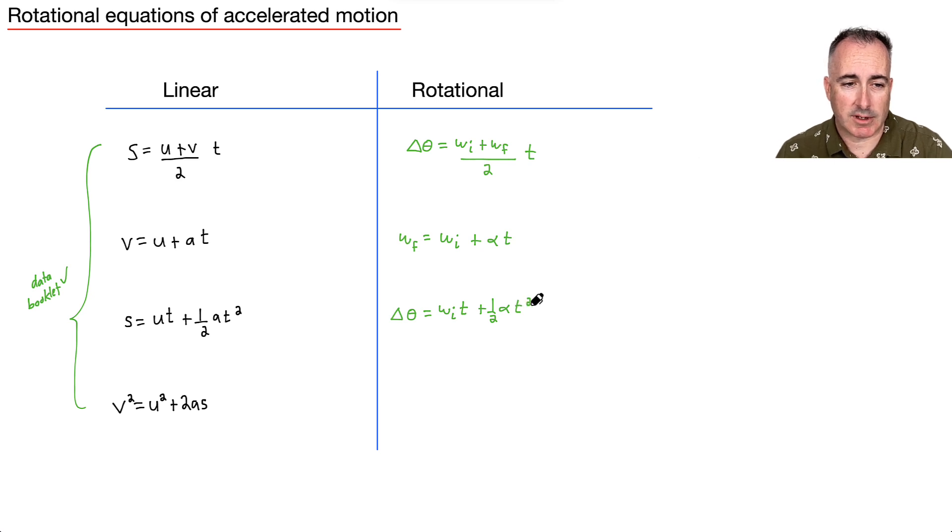And last one, instead of v, we say omega f, the final one, squared, equals. And instead of u, we say omega i squared. And then instead of plus 2as, we say 2 alpha, because that's a is alpha. And s, remember, is delta theta.